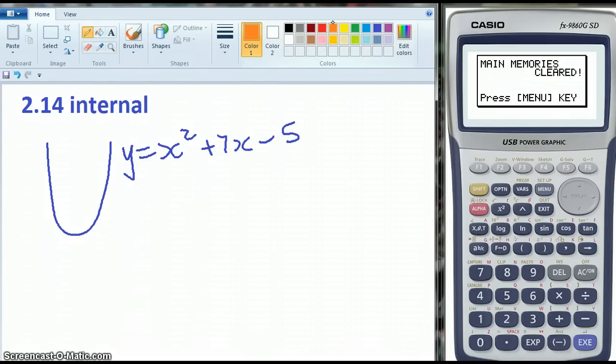And we have an equation of a straight line, and the straight line is Y equals minus 8X plus 10.